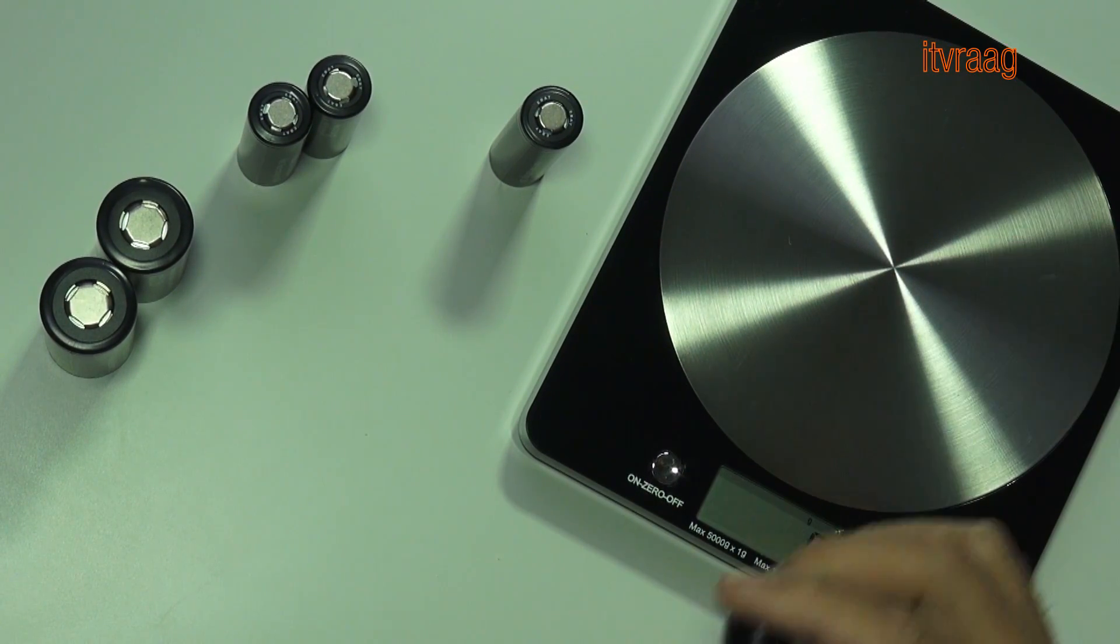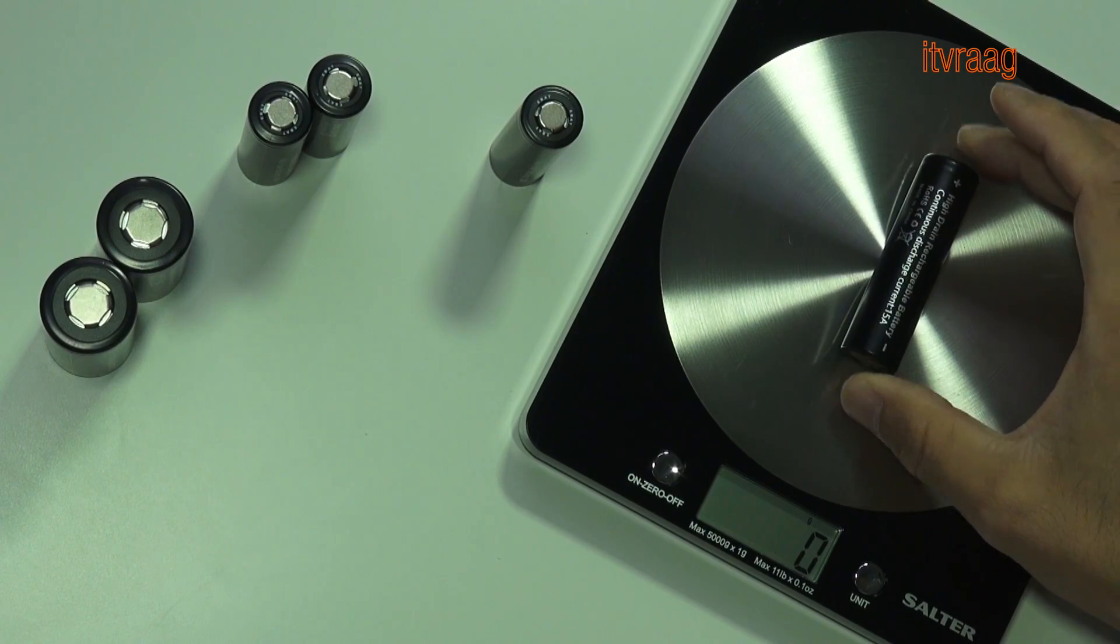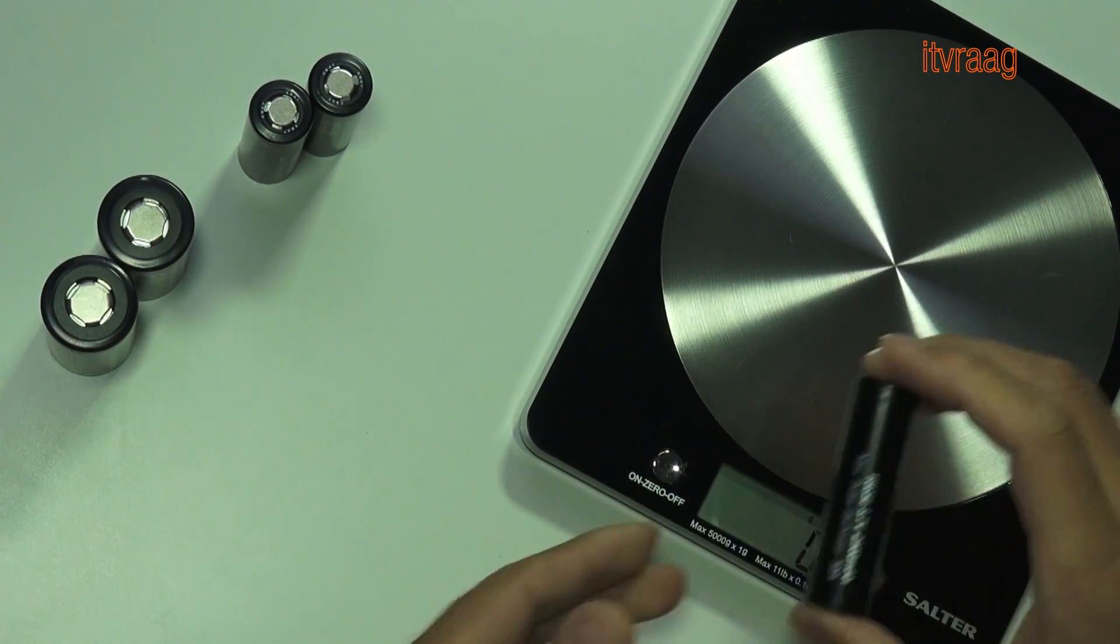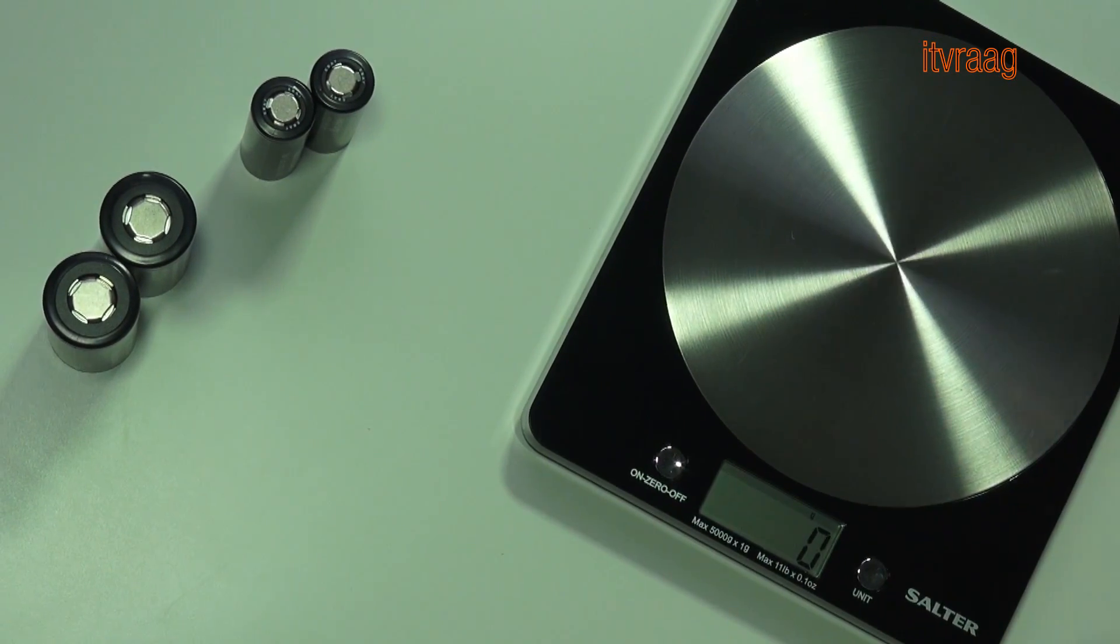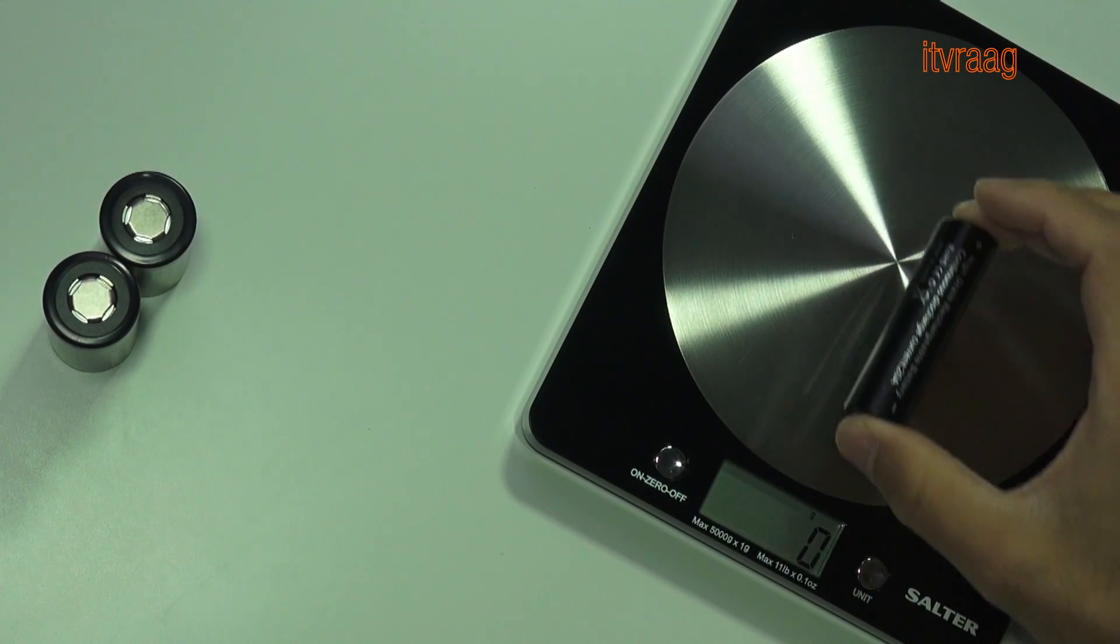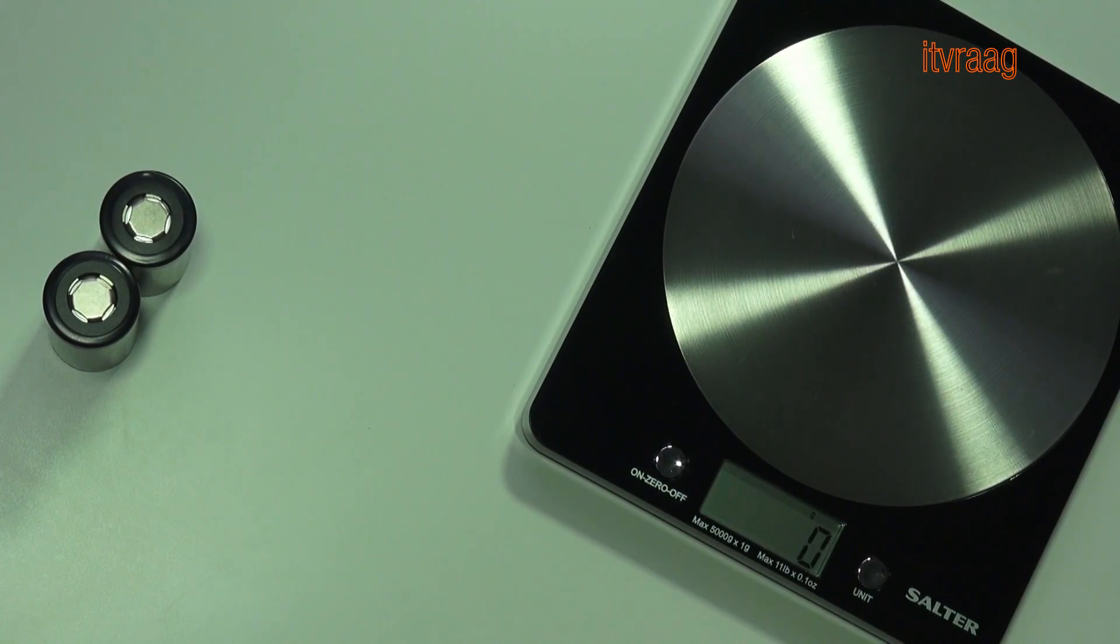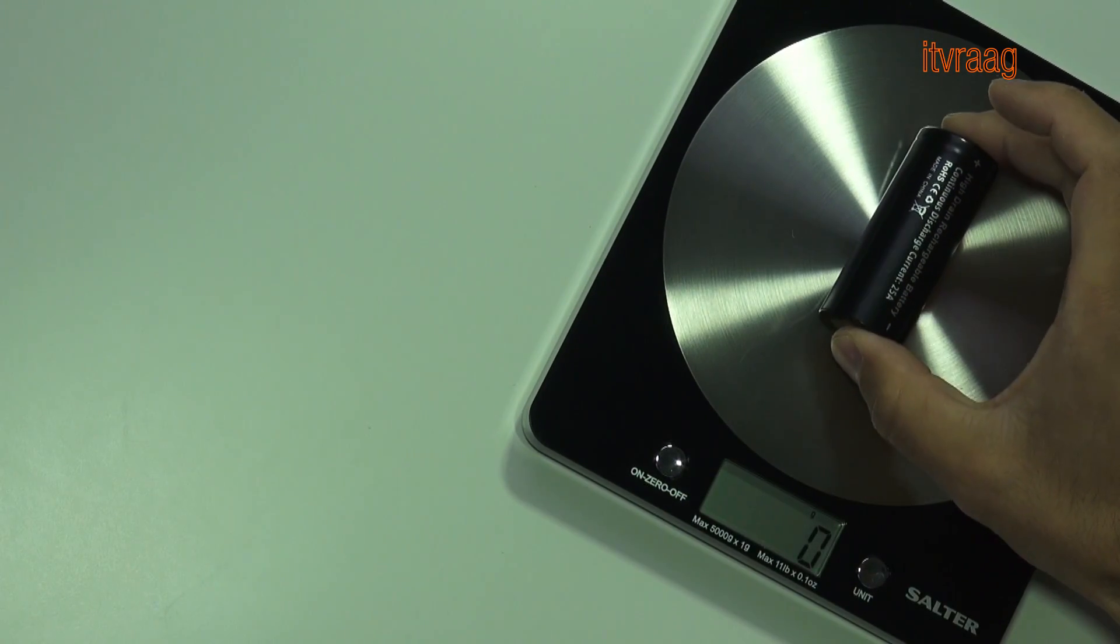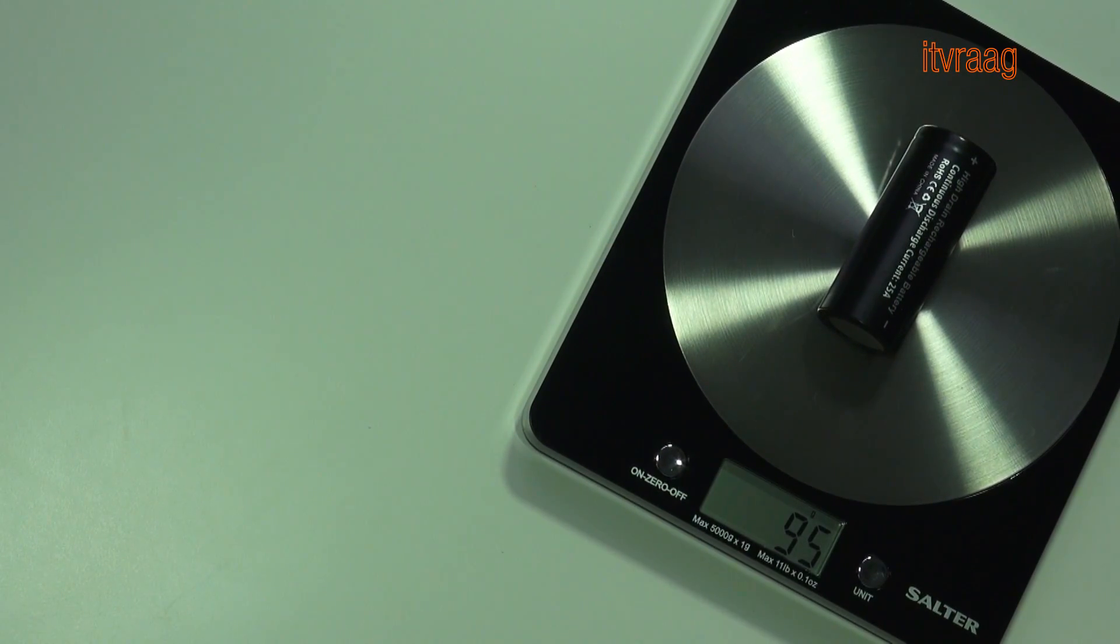There were no major surprises when weighing the cells. I was happy to see that they have used good isolation on the positive end of the cell. When many companies use paper-based isolation, they have used plastic.